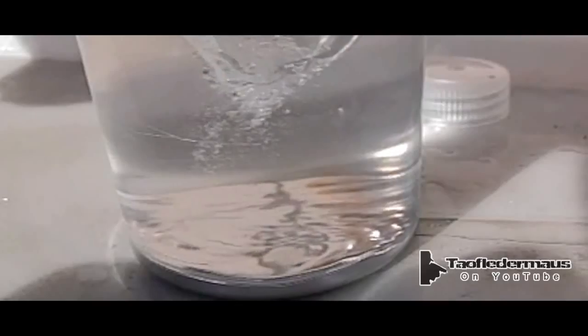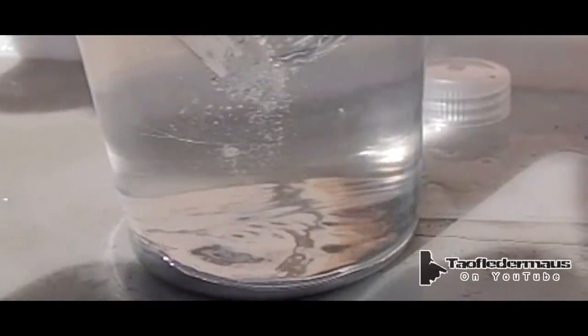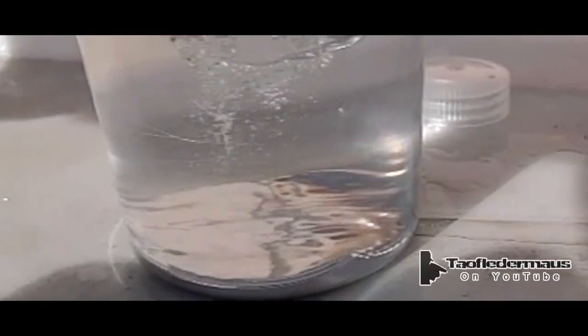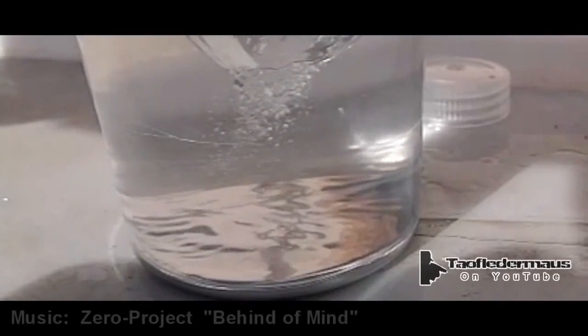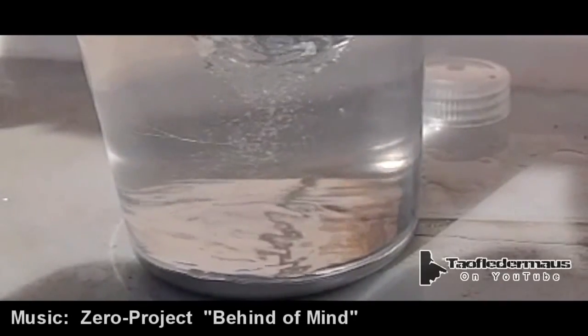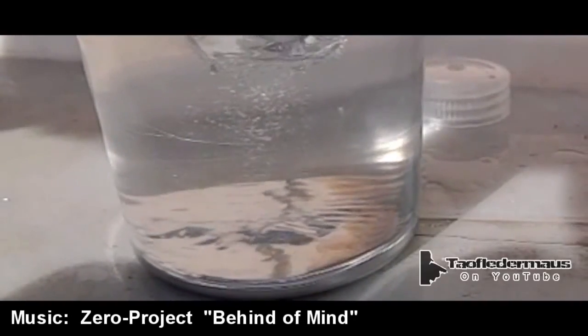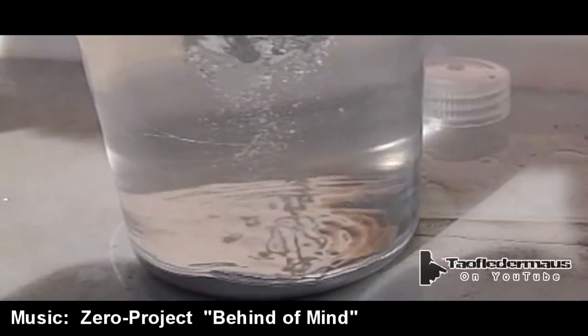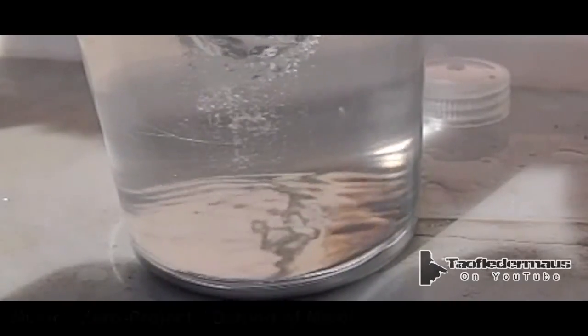I was kind of surprised how flat the mercury laid. I was kind of expecting it to be flung out a little bit more, but since it is so dense, it is about 14 times denser than water. I guess it's behaving as we would expect.